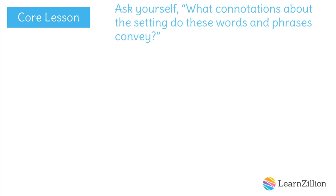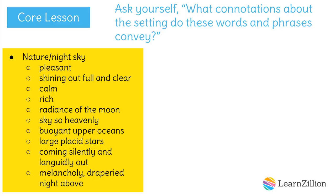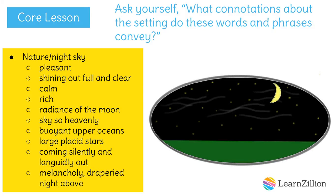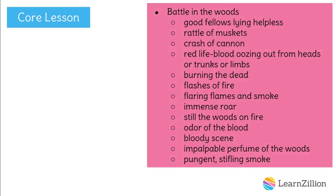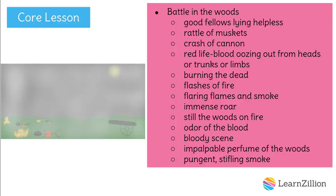Next, I'm going to ask myself: what connotations about the setting do these words and phrases convey? I need to look at my descriptions of the nature and night sky again in order to identify the implied feelings about this setting. When I look at this list, I see a beautiful setting. The sky is clear with the moon lighting up the heavens. I envision a starry night and some wispy clouds that would resemble the waves of the ocean. Now let's look at the descriptions of the battle. When I'm reviewing these descriptions, I see dead bodies and bloodstains on the grass. I see fire and smoke caused by a cannon. The smoke is so thick that I can barely breathe. This setting is completely opposite of the other one. I have no desire to be here, and honestly, it's a pretty scary image.